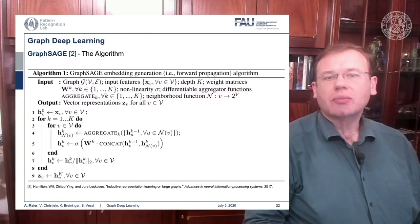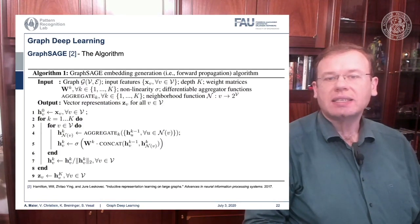This brings us to the GraphSAGE algorithm. You start with a graph and input features. You initialize at h_0 with simply the input of the graph configuration. Then you iterate over the layers and iterate over the nodes.